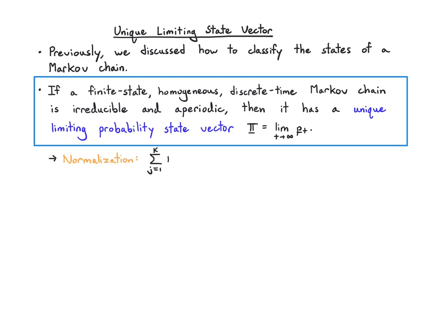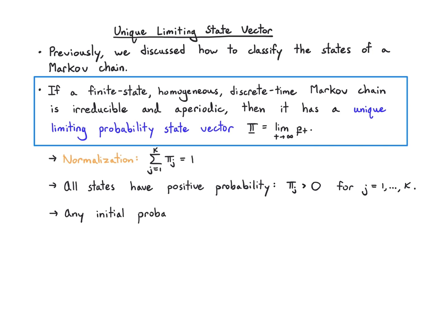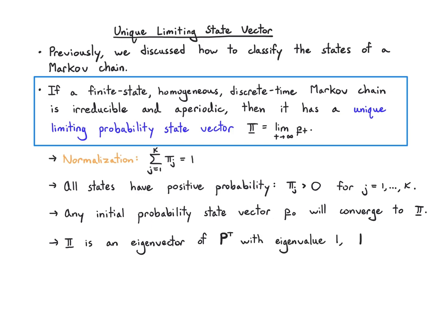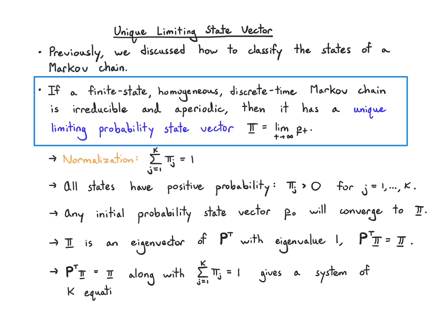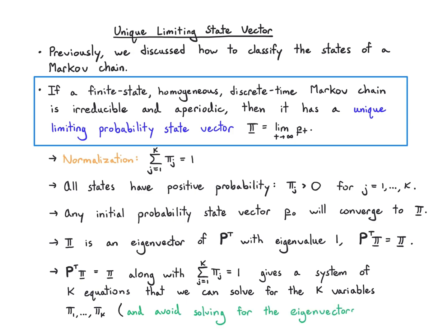Normalization tells us that this probability vector's entries have to sum to one. All states will have positive probability when the chain is irreducible and aperiodic. Any probability state vector we start with will eventually converge to pi, and pi is actually an eigenvector of P-transpose with eigenvalue one. We can use this equation along with normalization to get a linear system of k equations to solve for the k variables in the limiting distribution, avoiding directly solving for the eigenvector.